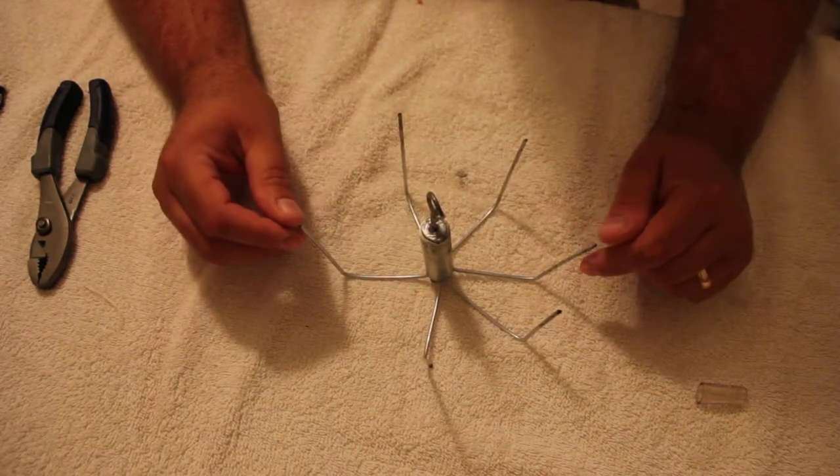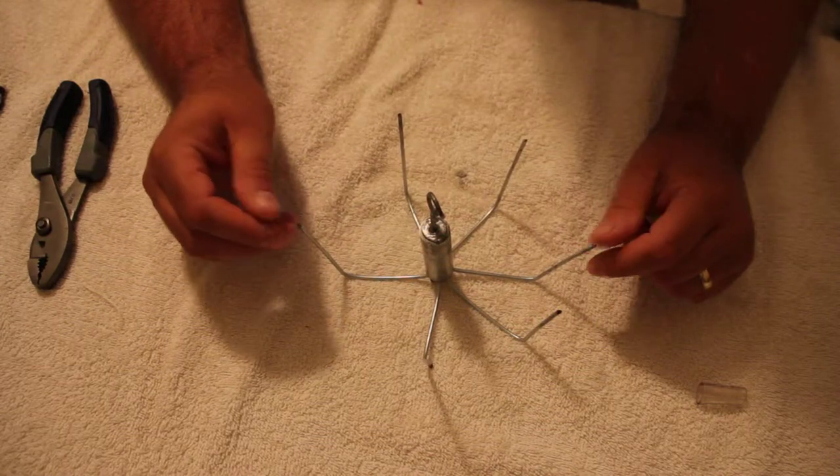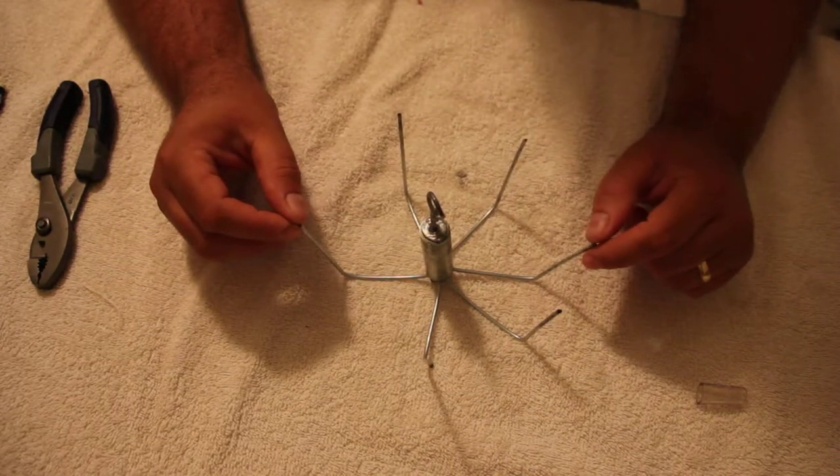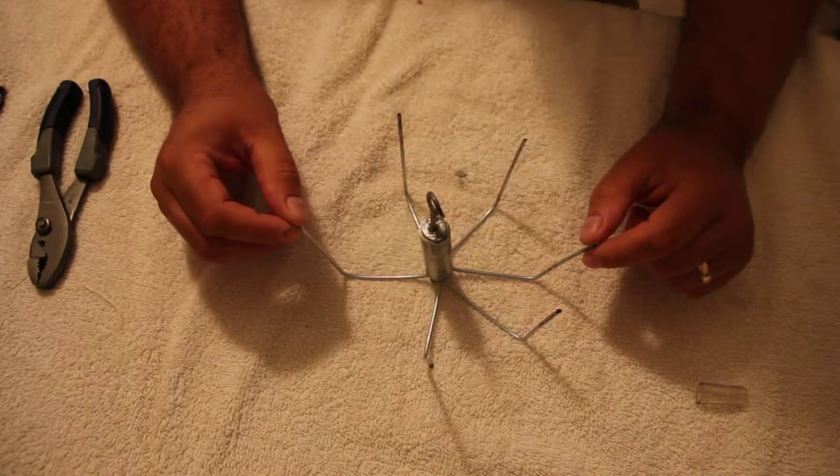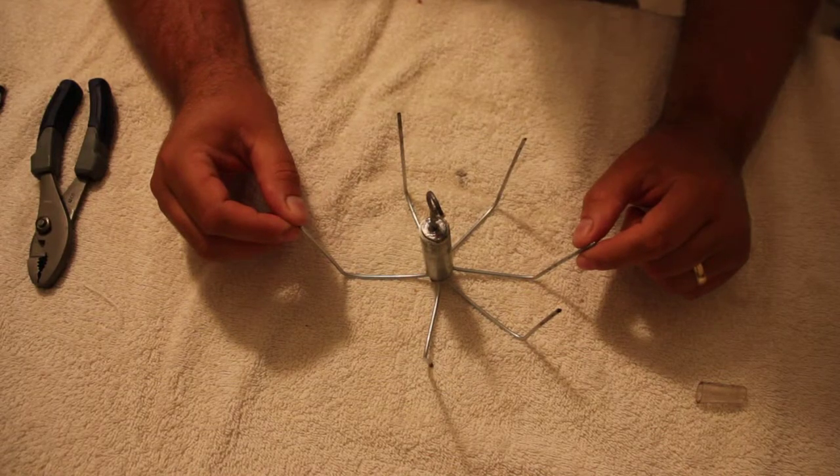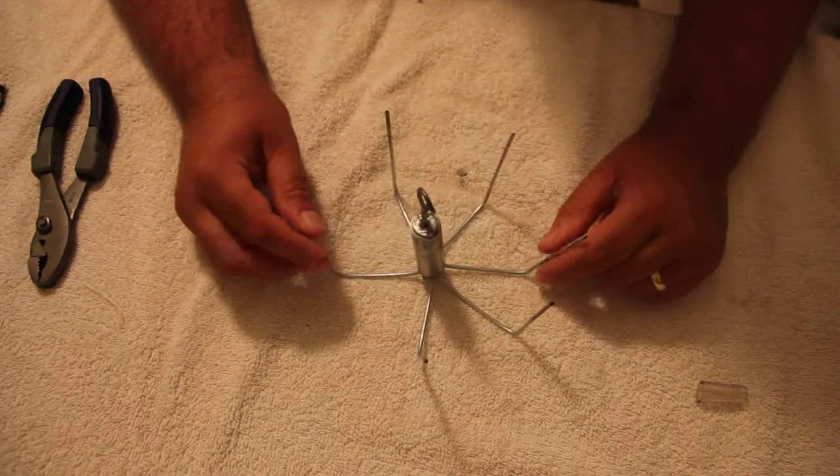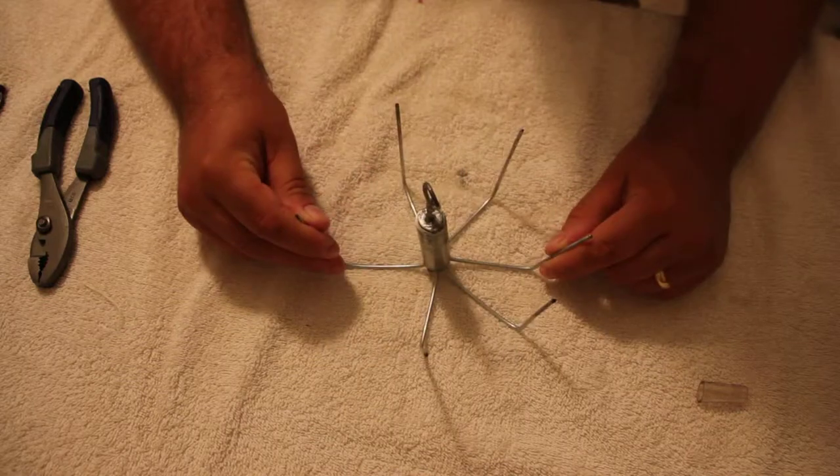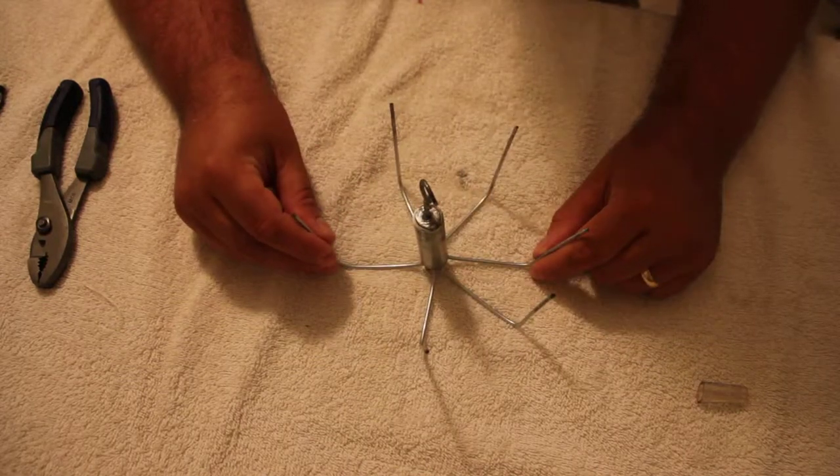So I was using monofilament at the time rather than braid. I have a cheap reel on that particular rod and it can't handle braid. And I did get a snap off. The snap off wasn't due to the unit. It did its job. It did exactly what it was supposed to do. It held fast.